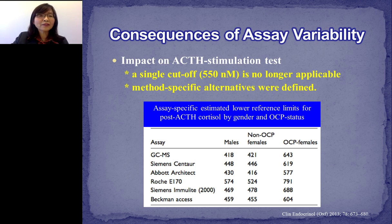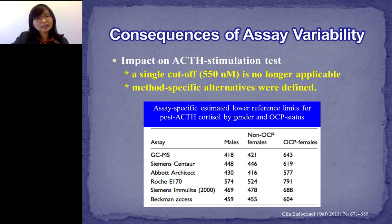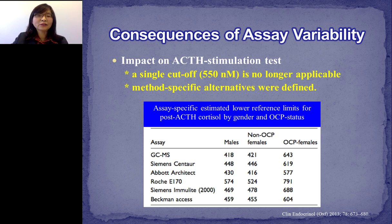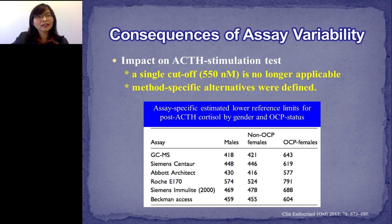A recent study revealed that cortisol assay variability has impacted the interpretation of ACTH stimulation tests used for differential diagnosis of adrenal insufficiency. A single cutoff value of 550 nanomolar, derived from historic studies, has been used for all clinical cortisol immunoassays when interpreting ACTH stimulation tests. However, in a recent study, cortisol responses after ACTH stimulation measured by five contemporary immunoassays showed apparent differences compared to GC-MS methods, especially in females taking oral contraceptives. Therefore, continued use of this single cutoff may lead to misdiagnosis of adrenal insufficiency and should be replaced by validated, assay-specific cutoffs.